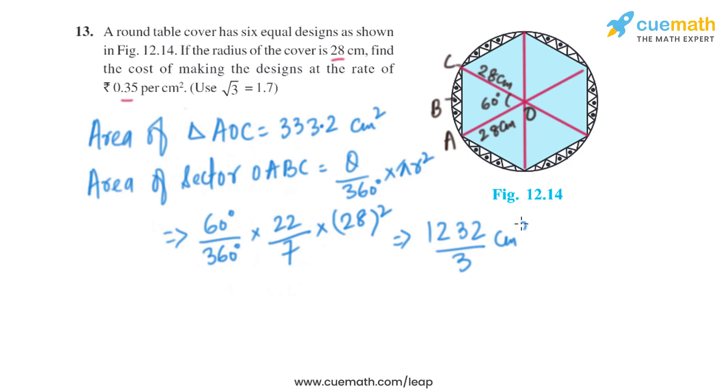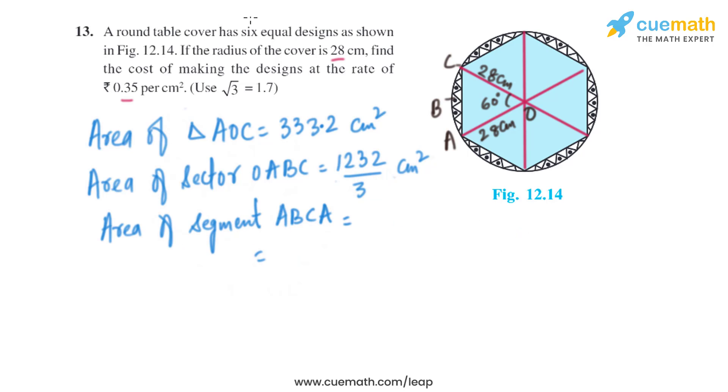From here we'll get the area of the sector as 1232 divided by 3 square centimeters. Now we'll get the area of segment ABCA, which is 1232 divided by 3 minus 333.2 square centimeters.